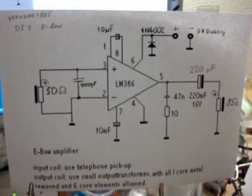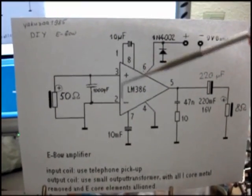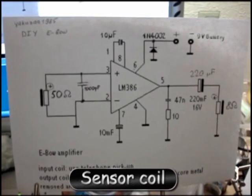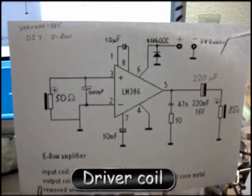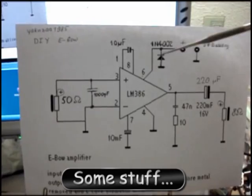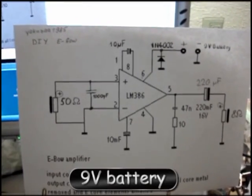Let's talk about the circuit schematic of the E-Bow. As you can see it's a very simple circuit. It contains the LM386 amplifier, the sensor and driver coils, several capacitors, a resistor, a diode, and the power supply battery.